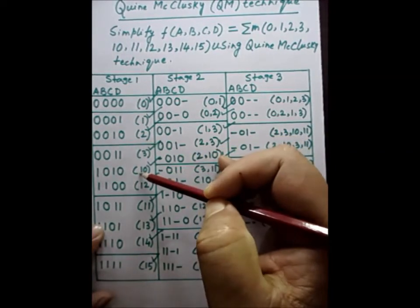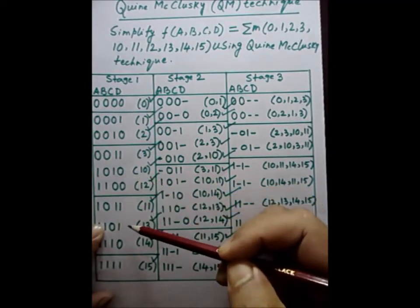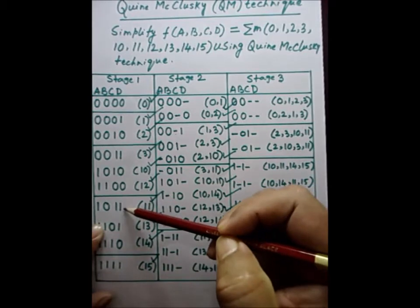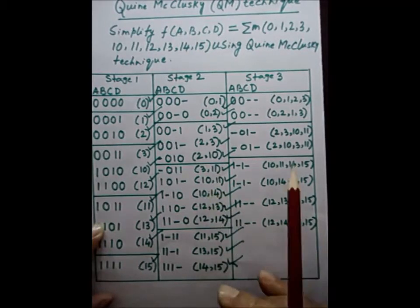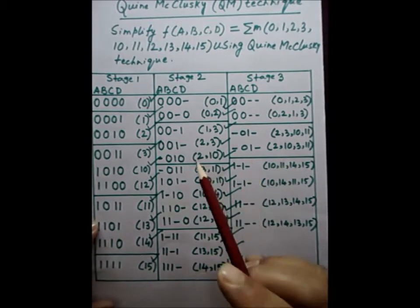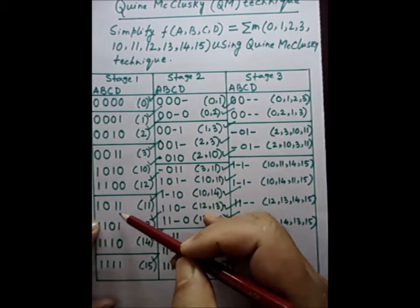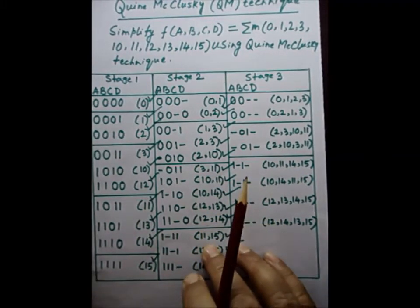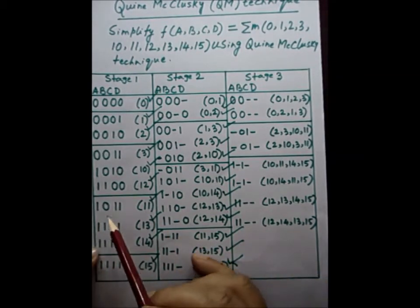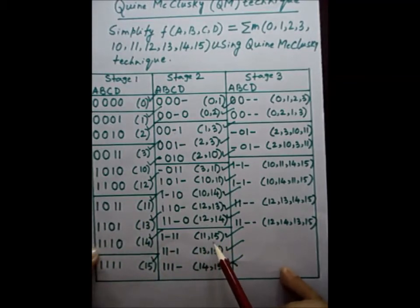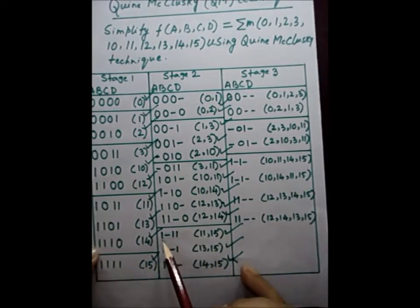After completing the second-to-third-group mapping we have those results, and then we move to mapping the third group with the fourth group, and then the fourth group with the fifth (last) group. For example, minterm 11 mapped with minterm 15: b and b-bar cancel, so b is eliminated and a dash is placed in the second position at the second stage.